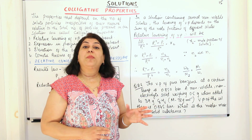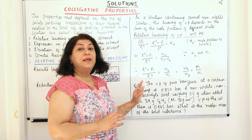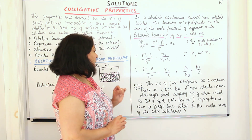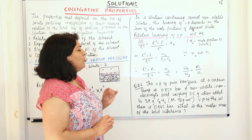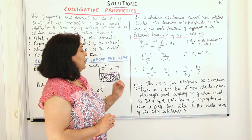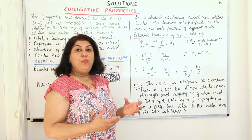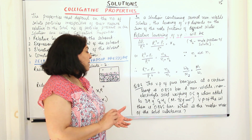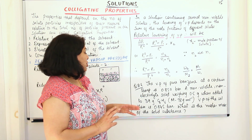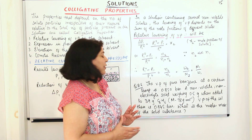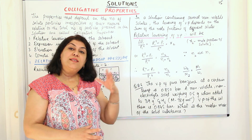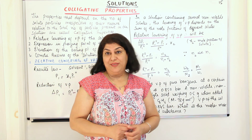Let us now solve one solved example from the textbook. The question is 2.6: The vapor pressure of pure benzene at a certain temperature is 0.850 bar. A non-volatile, non-electrolytic solid weighing 0.5 grams when added to 39 grams of benzene (molar mass = 78 g/mol) gives a solution with vapor pressure of 0.845 bar. What is the molar mass of the solid substance?